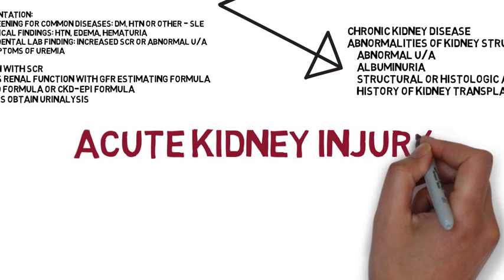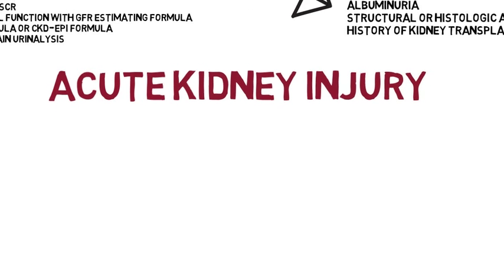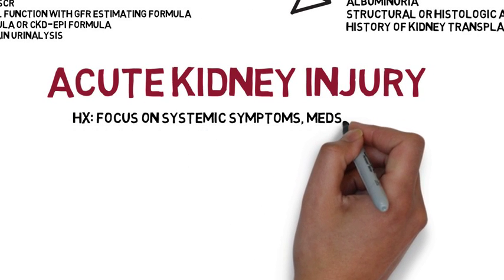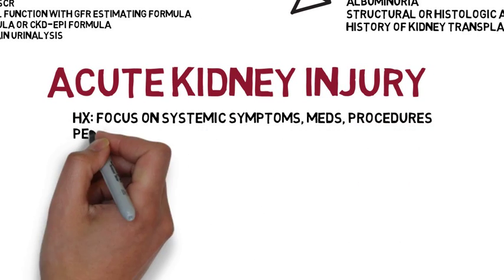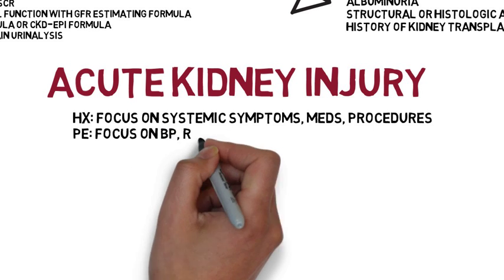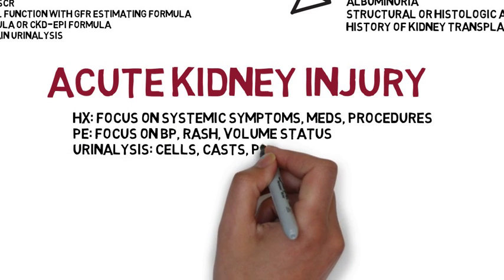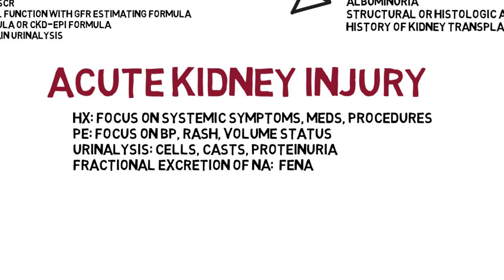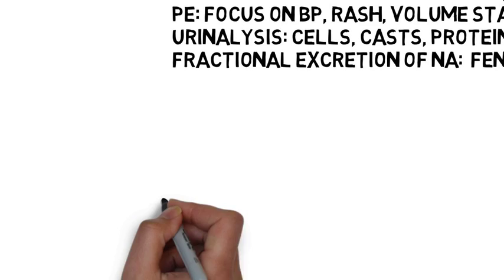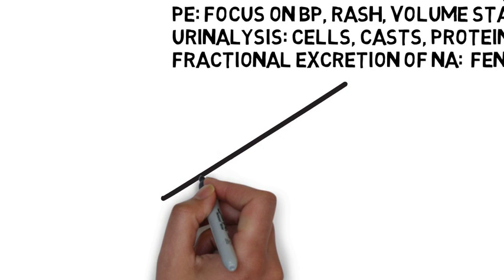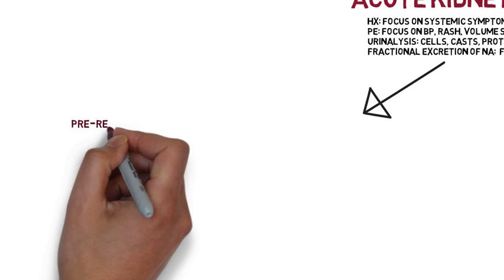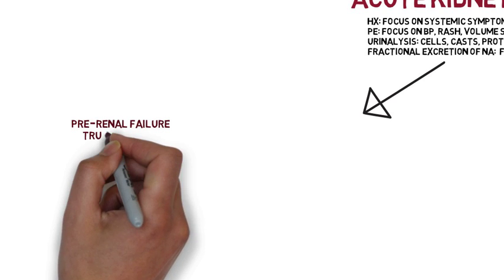In evaluating acute kidney injury, the focus is really on whether there are systemic symptoms, any medications including over-the-counter, the physical exam and volume status, and then looking at the urinalysis particularly for cells and casts, and determining the fractional excretion of sodium.